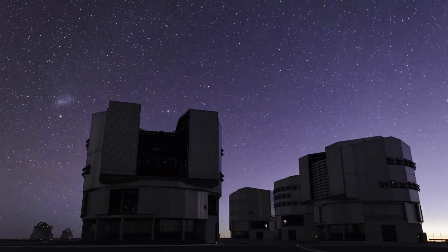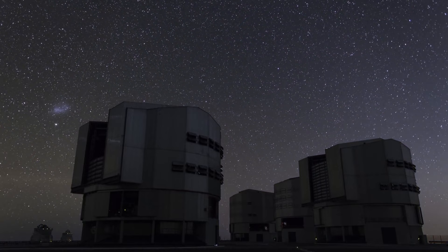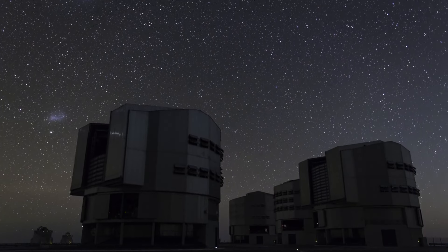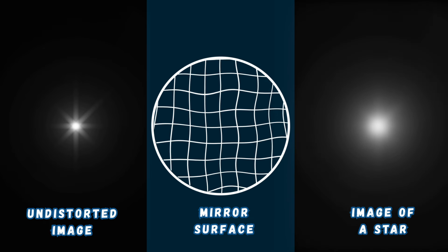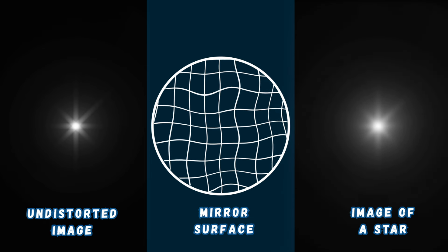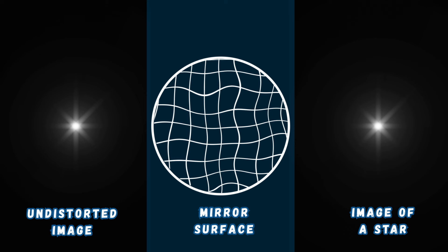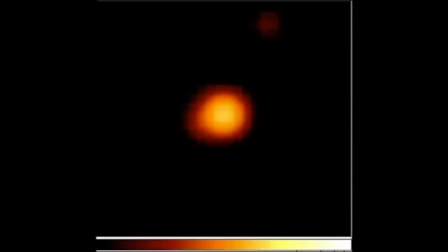In simpler terms, we need some reference — for example, a bright star with known characteristics. After obtaining the image of this star, naturally distorted by atmospheric refraction, we feed it to the computer, which calculates how we should distort our mirror to correct the errors. Now, when we reflect the light from the desired star off the distorted mirror, we get an image that is maximally free from distortions introduced by the atmosphere.